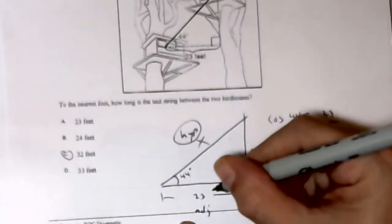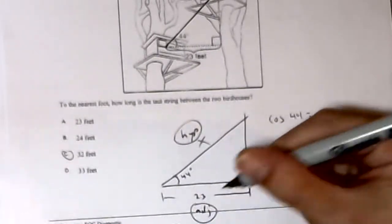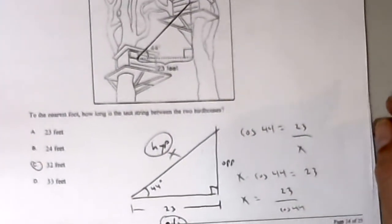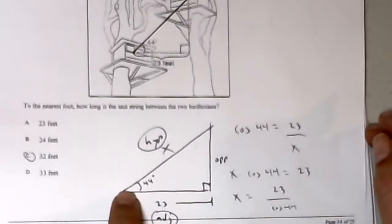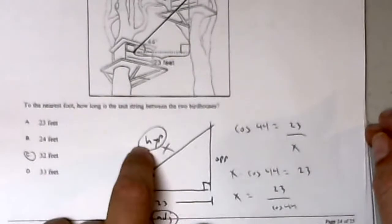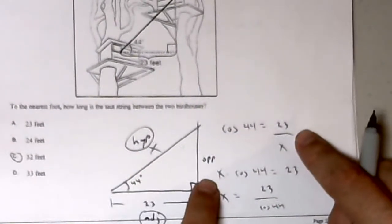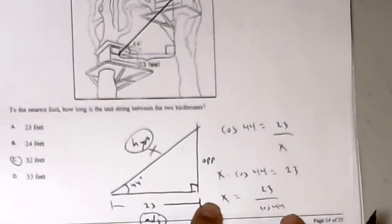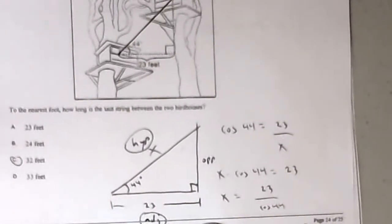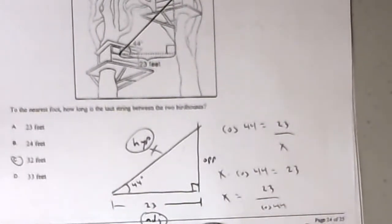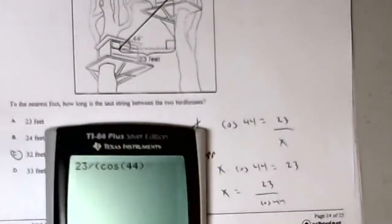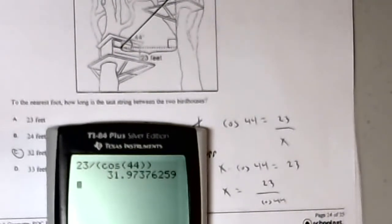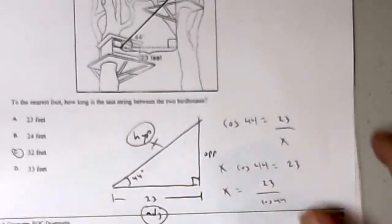I'm dealing with the ones that are given: our hypotenuse and our adjacent. So that tells us we're using cosine. The cosine of 44 equals 23 over X. I multiply both sides by X. X times the cosine of 44 equals 23, divide both sides by the cosine of 44. 23 divided by cosine 44, and that gives me about 32 feet.